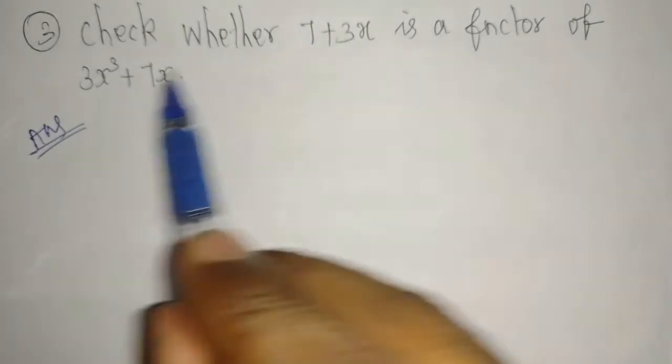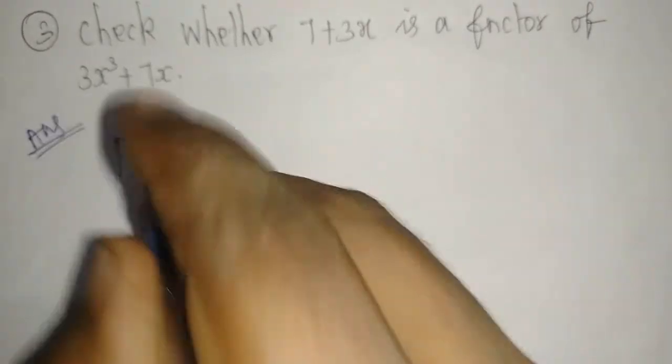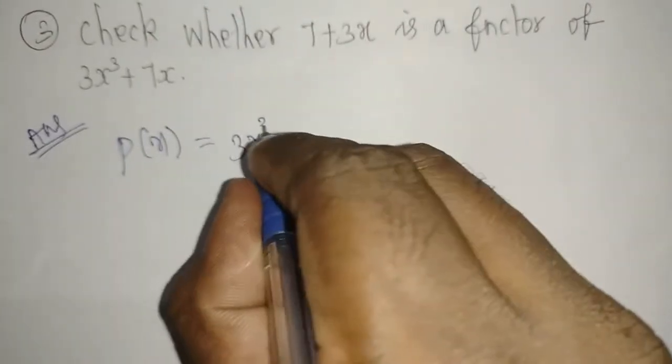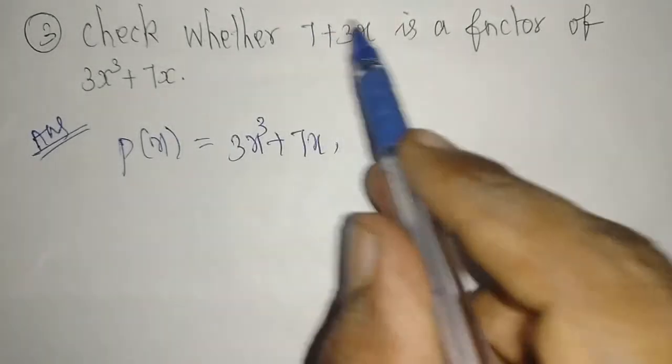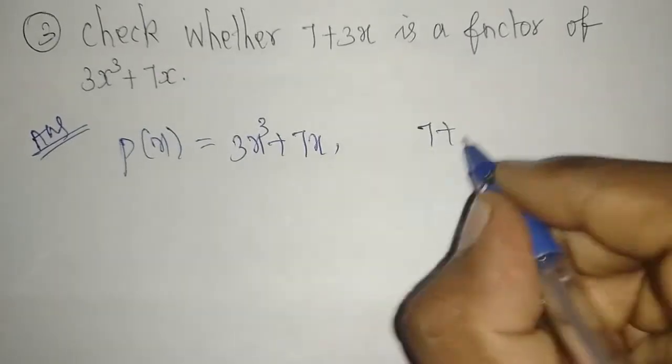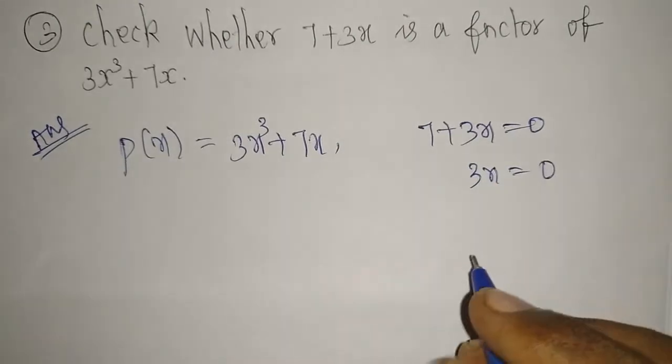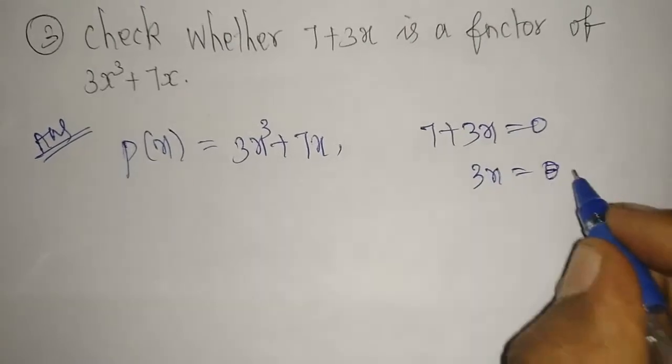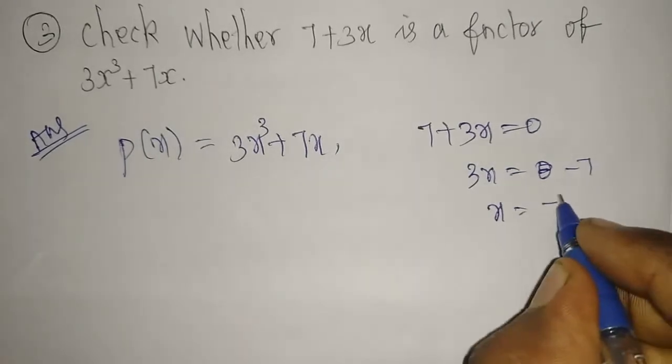This polynomial, we have to check whether it is a factor of this polynomial or not. So p(x) equals 3x³ plus 7x. The divisor they ask to check is a factor or not. So the factor I'm going to take equal to 0, then only we can find the value of x. 7 plus 3x equals 0, so 3x equals minus 7, then x equals minus 7 divided by 3.